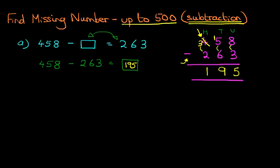Now we can write this in the original question: 195. So 458 minus 195 equals 263. The missing number was 195. It's very straightforward.